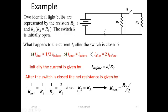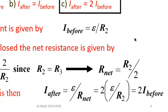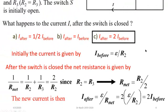Now replacing this in Ohm's formula, the total current in the second situation equals the potential difference divided by the total resistance. Since the total resistance is R2 divided by 2, replacing it gives a current that is two times the current in the previous situation. This is the correct answer: the current doubles after the switch is closed.